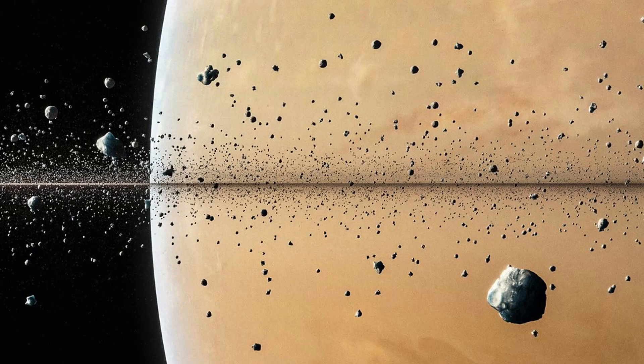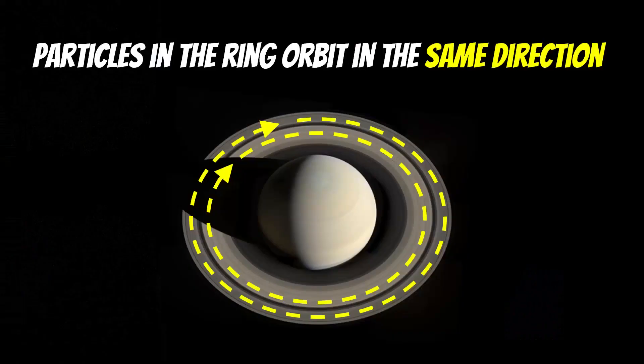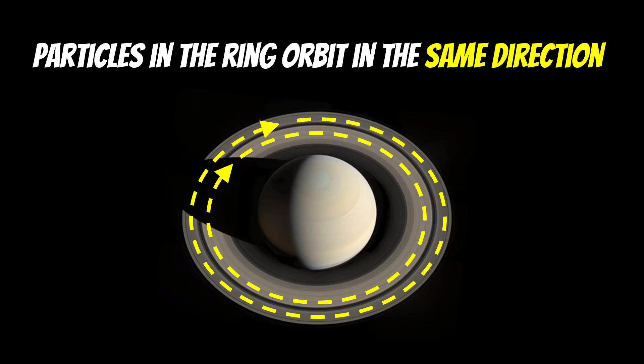These are approximately meter size and below, so quite small particles, and they're all orbiting in a common direction. Think of it like this: they're all moons quite close to each other that are all orbiting in the same direction.